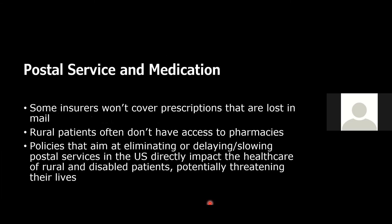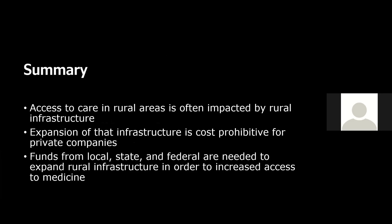In summary: access to care in rural areas is often impacted by infrastructure in those areas, which is often lacking compared to suburban or urban areas. Expansion of that infrastructure is cost-prohibitive for private companies, so funds from local, state, and federal sources are needed to expand the infrastructure to increase access to medicine and quality of life. And this is not a zero-sum game — preliminary data shows this will increase economic opportunities and increase incomes and quality of life in these areas.